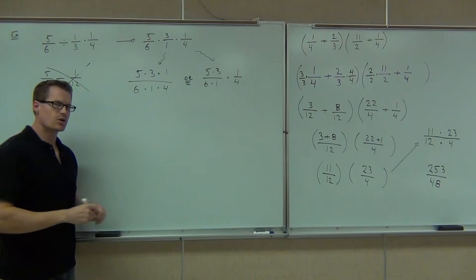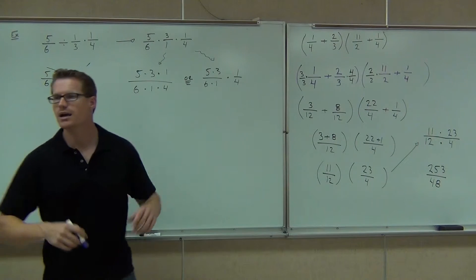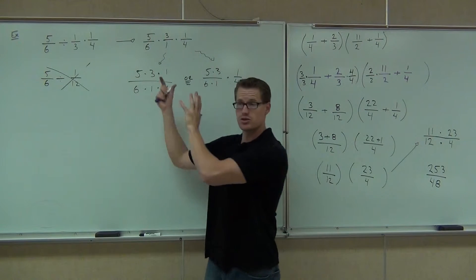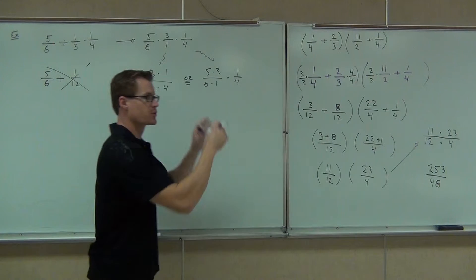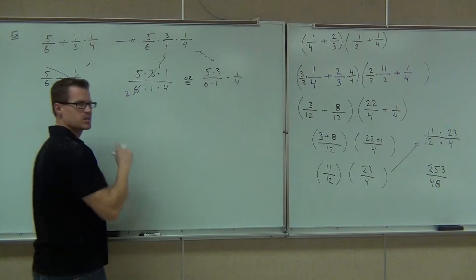In either case, I need you to notice that you're going to be able to simplify this. The 3 and the 6 do simplify. Why? Well, because I have it multiplied. It's not added or subtracted. It's multiplied on both the numerator and denominator. 3 goes into 3 one time and 6 two times. Are you getting pretty good at that, I hope?